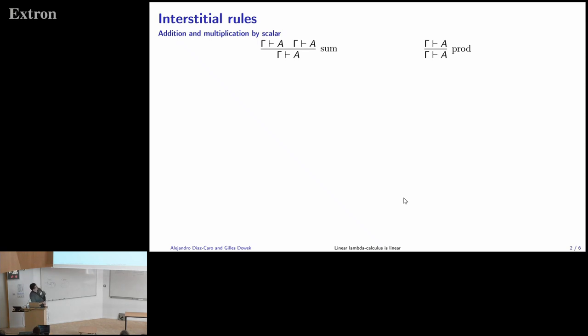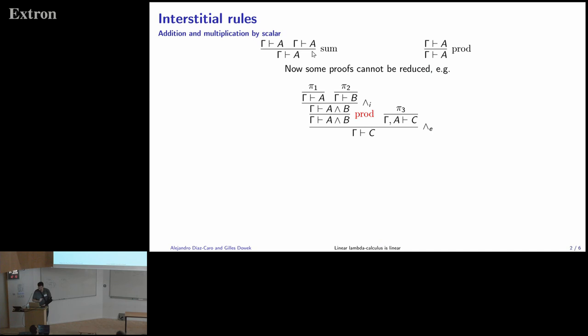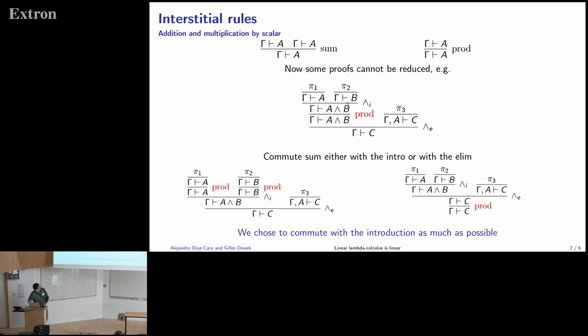The first thing is we will add to intuitionistic linear logic these two rules, intuitionistic rules. They are rules that they don't change the sequent that you have. If you can deduce A from gamma, then you can deduce A from gamma. One is called sum, the other is called product. And then, of course, if we add this to the logic, then you will have some problem with the cut elimination because you can have one of these rules in the middle of a cut.